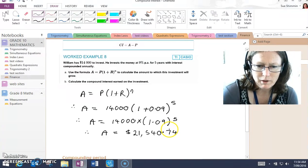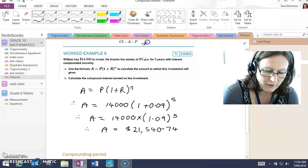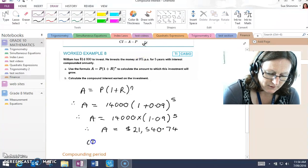Part B, calculate the compound interest earned on the investment. The compound interest is A minus P.